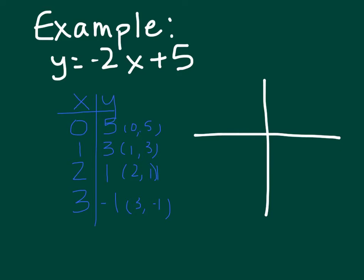So I'm going to graph 0, 5. I'm going to graph 1, 3. I'm going to graph 2, 1. And I'm going to graph 3, negative 1. And I notice they all form a line. I want to use my ruler and make a line that goes beyond the points and put arrows on both ends because that line can go on forever.